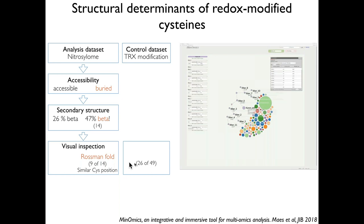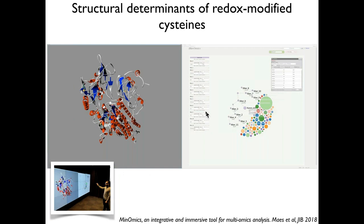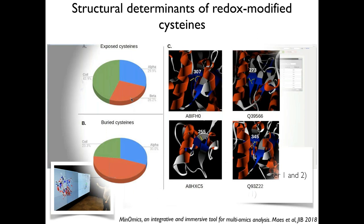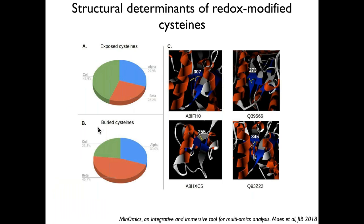The first task in such a study would be to query the underlying database. You choose some data set — here nitrosylations that were observed experimentally on the proteome. Then we made a further selection on the cysteines that are typically modified to look at the buried ones, and tried to see whether they have any particular secondary structure. Combining that with a visual inspection, we came up with a hypothesis that this may be linked to a specific fold of the proteins when the cysteine is buried — a so-called Rossmann fold. That we can then compare to a control data set that has other modifications than nitrosylation. You can click on one of the selected data points and have the view in 3D.